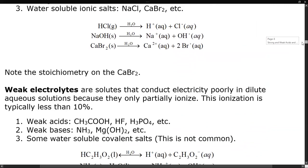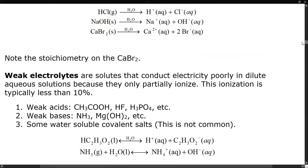Weak electrolytes are solutes that conduct electricity poorly in dilute aqueous solutions because they're only partially ionized — typically less than 10% ionization. Weak acids include acetic acid, hydrofluoric acid, and phosphoric acid. Weak bases include ammonia and some sparingly soluble bases like magnesium hydroxide — some dissolve, so you get some ions. Many metal hydroxides are not terribly soluble. There are also some water-soluble covalent salts, but that's not very common at this level.